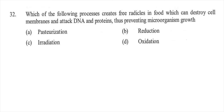Question thirty-two: Which of the following processes creates free radicals in food which can destroy cell membranes and attack DNA and proteins, thus preventing microorganism growth — option A pasteurization, option B reduction, option C irradiation, or option D oxidation? The right answer is C, irradiation.